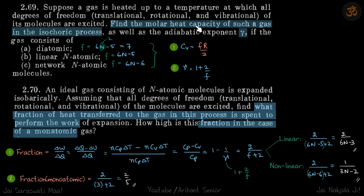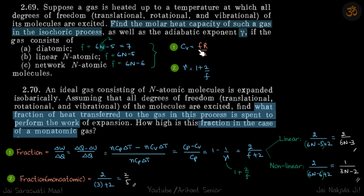Problem 2: Find the molar heat capacity in an isochoric process and the value of gamma for diatomic linear, n-atomic linear, and n-atomic non-linear gas. For linear molecules, f = (6n - 5); for diatomic (n = 2), f = 7. For non-linear, f = (6n - 6). Molar heat capacity Cv = fR/2, so substituting values of f gives the answers.